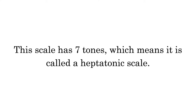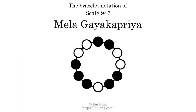This scale has 7 tones, which means it is called a heptatonic scale. This is a bracelet notation diagram of Scale 947. The shaded circles represent tones that appear in the scale, and they are read clockwise, starting at the top.